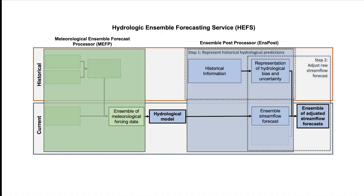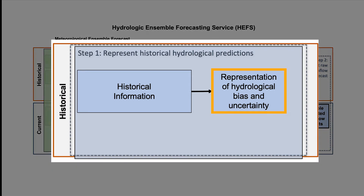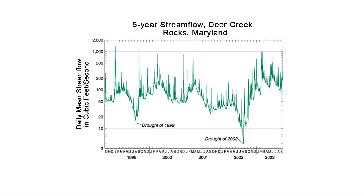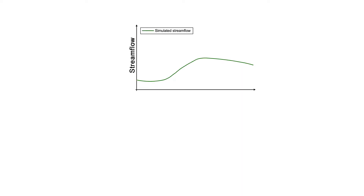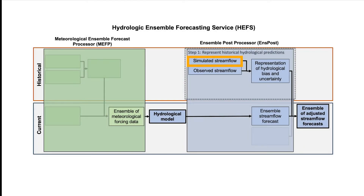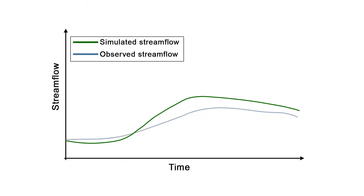ONSPOST uses three pieces of historical information to build a representation of historical hydrological bias and uncertainty for each river basin. The first two are the simulated and observed streamflow. The historical simulated streamflow is a model-generated approximation of streamflow produced for many years, using observed temperature and precipitation as inputs. This is in contrast to a forecast streamflow, which uses forecast temperature and precipitation. The simulated streamflow is produced using the same hydrological model used to produce the ensemble streamflow forecasts. Therefore, the difference between the historical simulated streamflow and observed streamflow represents a hydrological model error.